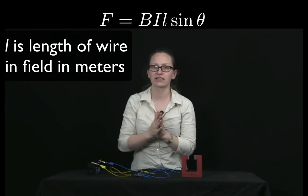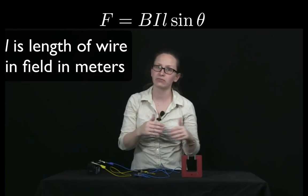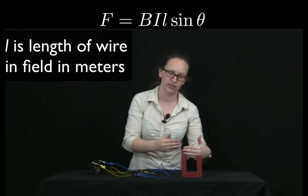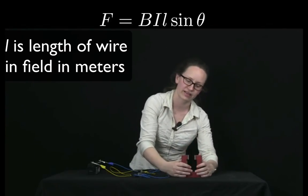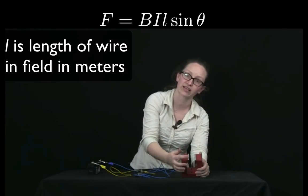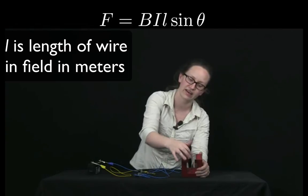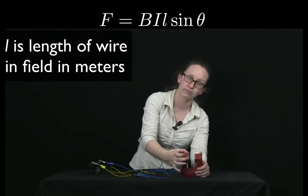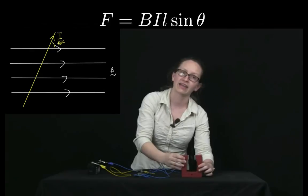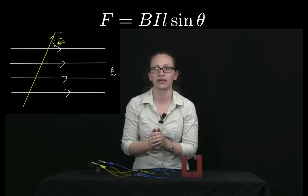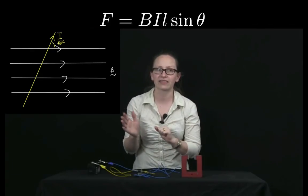And L is the length of the wire which is inside the magnetic field. So in this case, because our magnetic field was just between these two ends of the bar magnet along here, the length that we'd be using would be this length here. And theta is the angle between the magnetic field and the current.